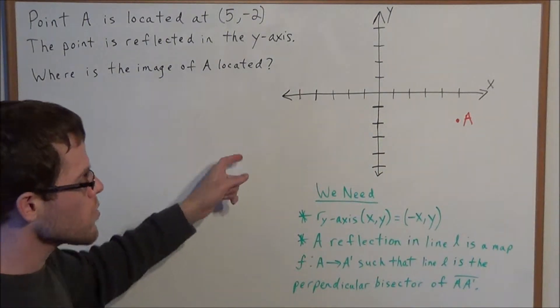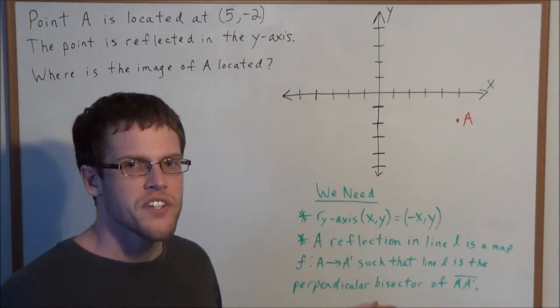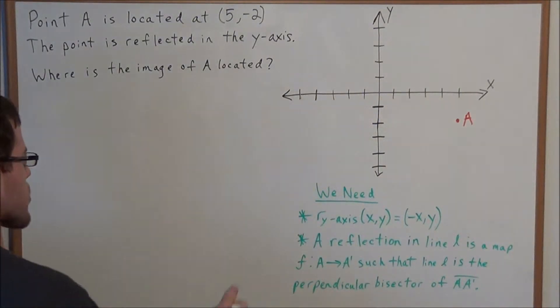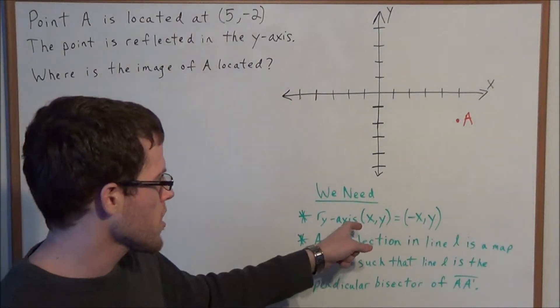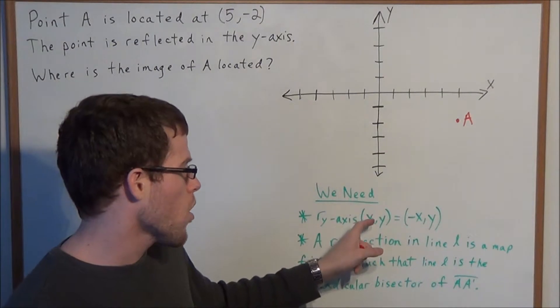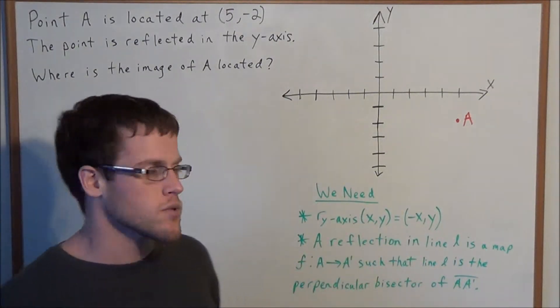So one way to do this would be to use the equation for a reflection in the y-axis. So to use the equation, when we have some point xy, a reflection in the y-axis of xy equals negative xy.